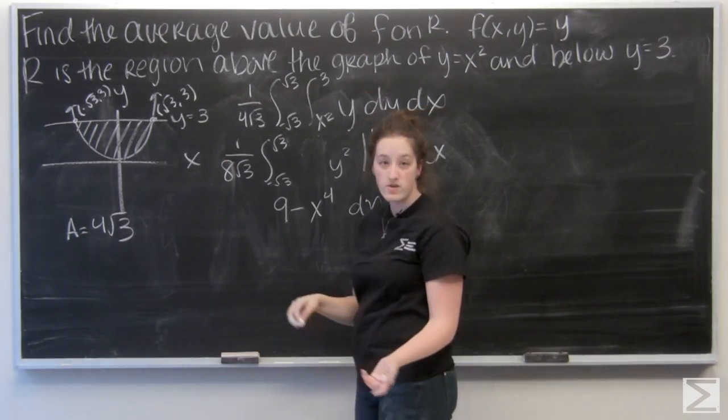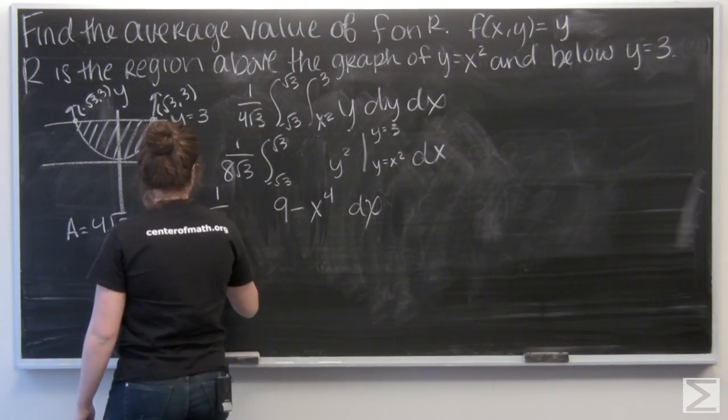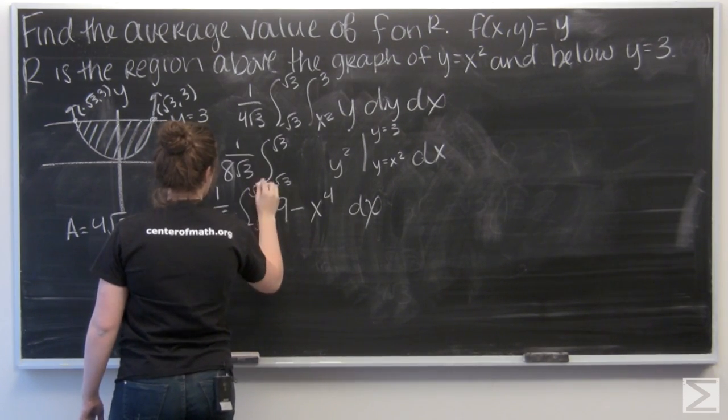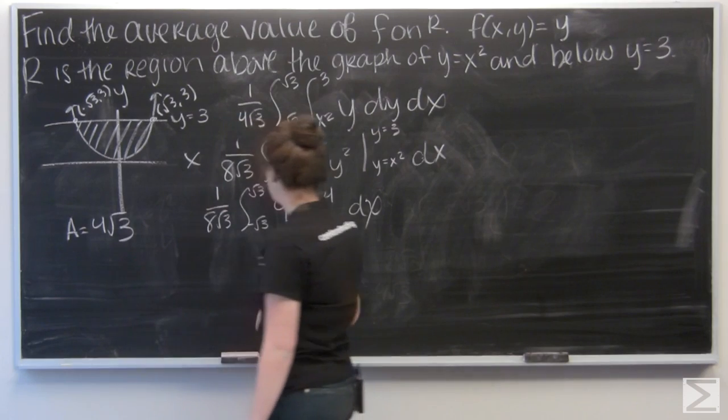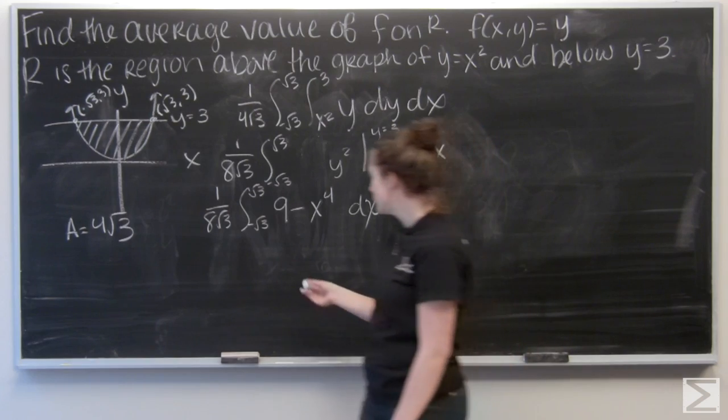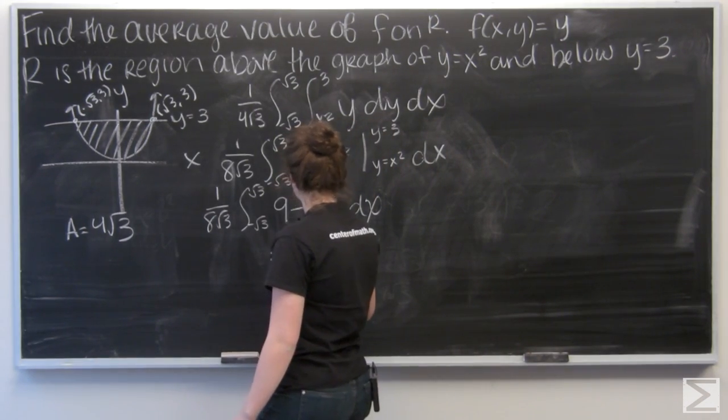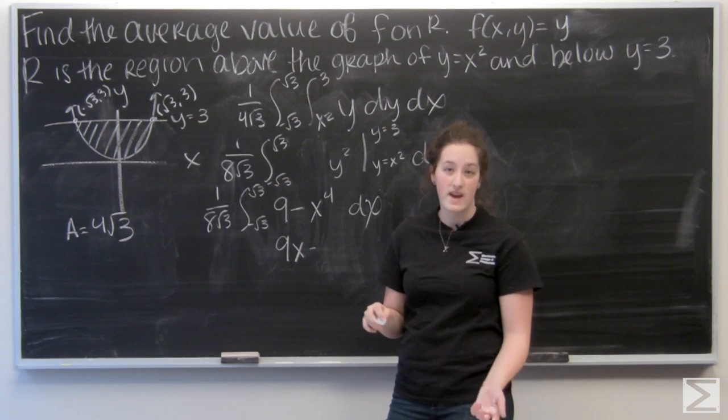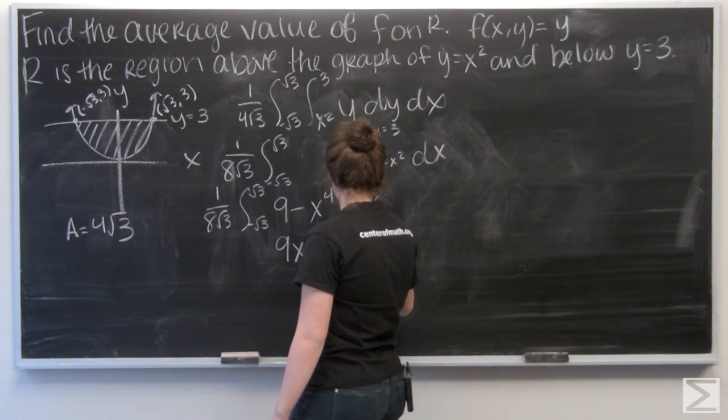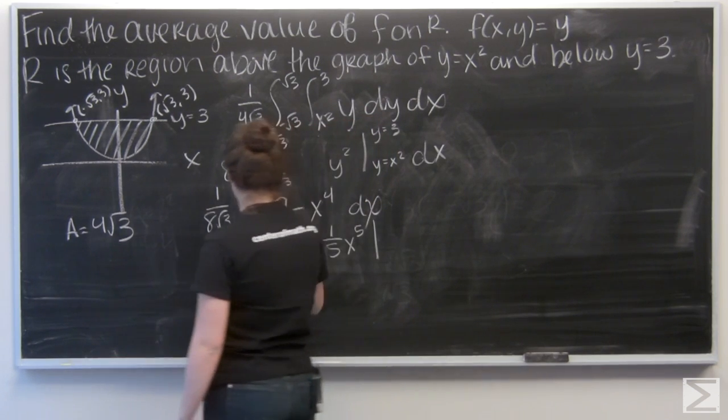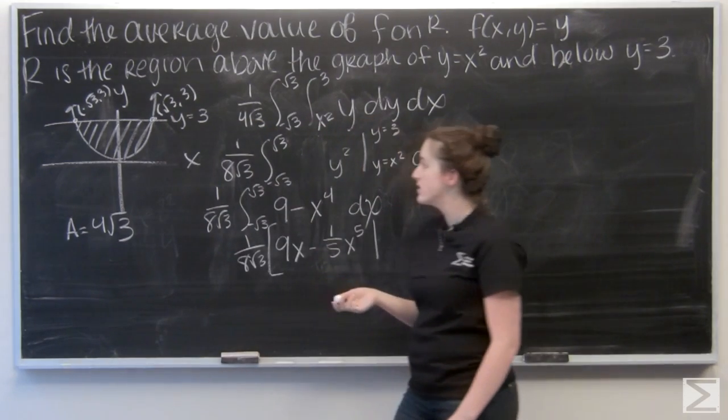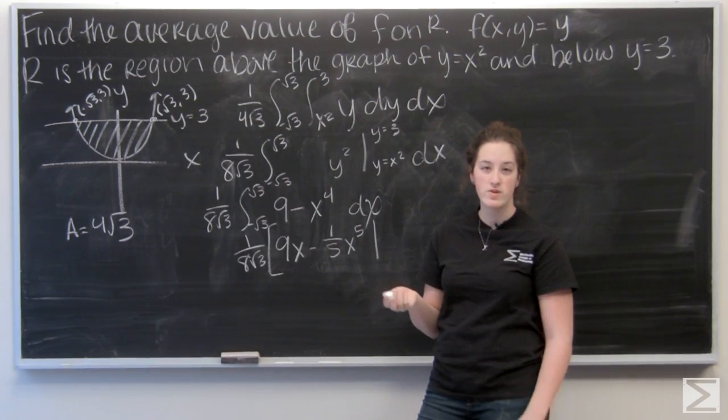So now I have to integrate with respect to x. So 9 is a constant. The integral of 9 with respect to x is going to be 9x. And x to the 4th becomes 1 fifth x to the 5th. And I'm going to evaluate from x equals negative root 3 to root 3.